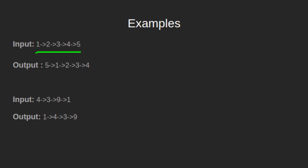In the second example, we have a linked list 4 3 9 1. After moving the last element to front, we get the linked list as 1 4 3 9.